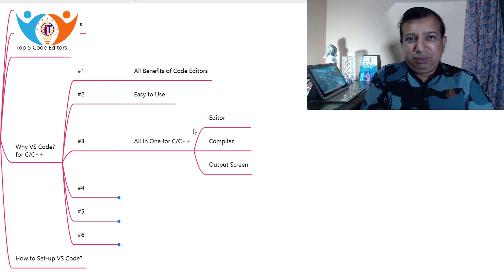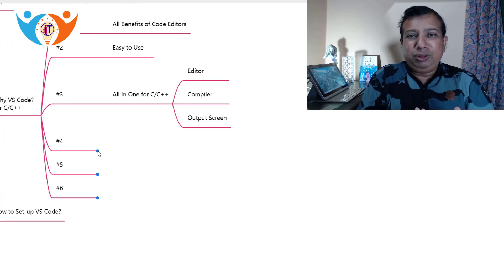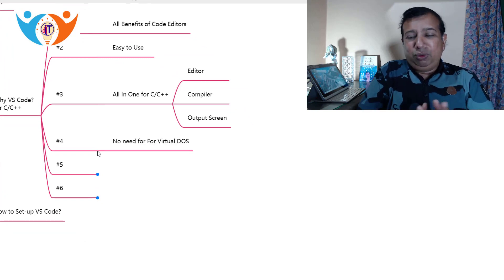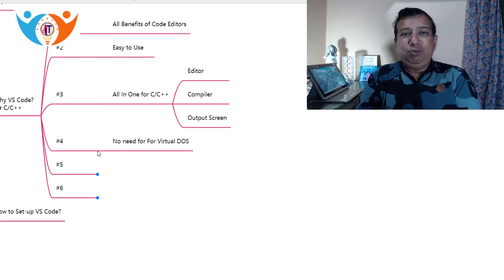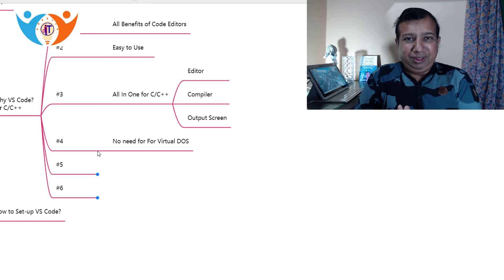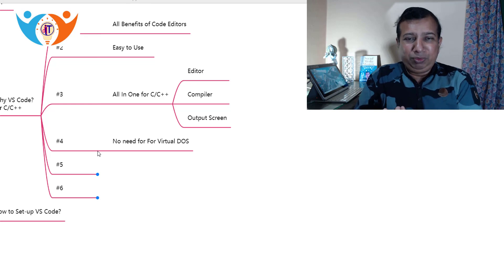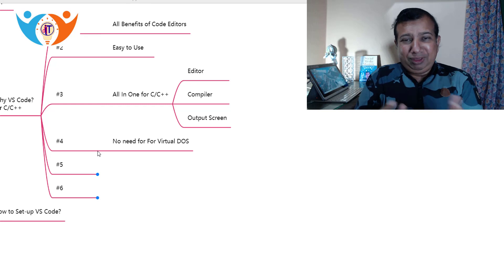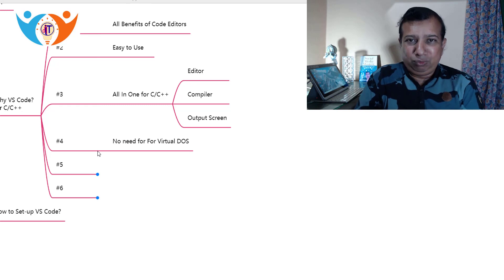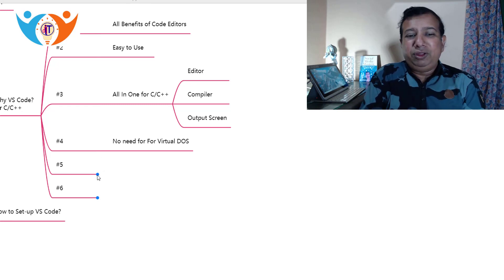Reason number four: you don't need to work with DOS-based editors. A virtual DOS box has to be installed if you are using modern Windows versions, because we cannot install Turbo C IDE directly on Windows — it is an older DOS-based environment. So we have to install a virtual DOS box and then install Turbo C inside it. Instead of all that, if you use VS Code you can directly use it without needing any virtual DOS box.